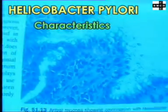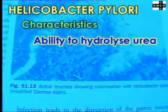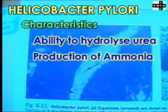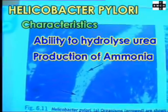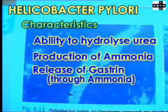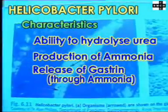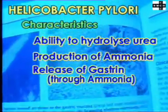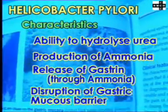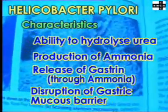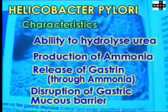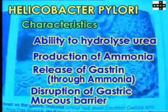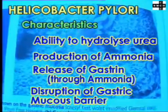One of the characteristics of the organism is its ability to hydrolyze urea, resulting in the production of ammonia, a strong alkali. This ammonia causes the antral G cells to produce gastrin. Infection also leads to disruption of the gastric mucus barrier by enzymes produced by the organism, and some cytotoxins are also produced.